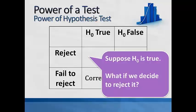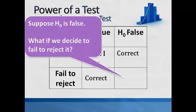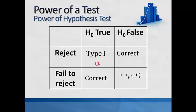Now suppose H0 is true and we decide to reject it — we have a Type 1 error. The probability of a Type 1 error is denoted by alpha, our level of significance. Now suppose H0 is false and we decide to fail to reject it — we have a Type 2 error. We basically failed to reject H0 when we really should have. The probability of a Type 2 error is denoted by beta.